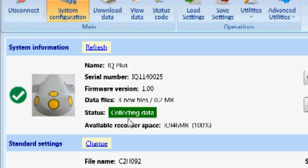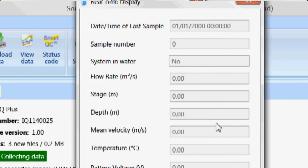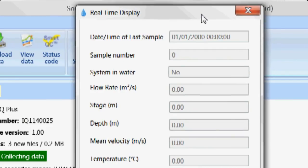If I want to view live data, I can click on view live data. What you see here, everything is zero right now because I haven't taken my first sample. But it's going to be collecting data now for three minutes. When I get my first sample, this will update to say sample number one. System in the water will be yes. It will give me the calculated flow rate, the stage, the depth.